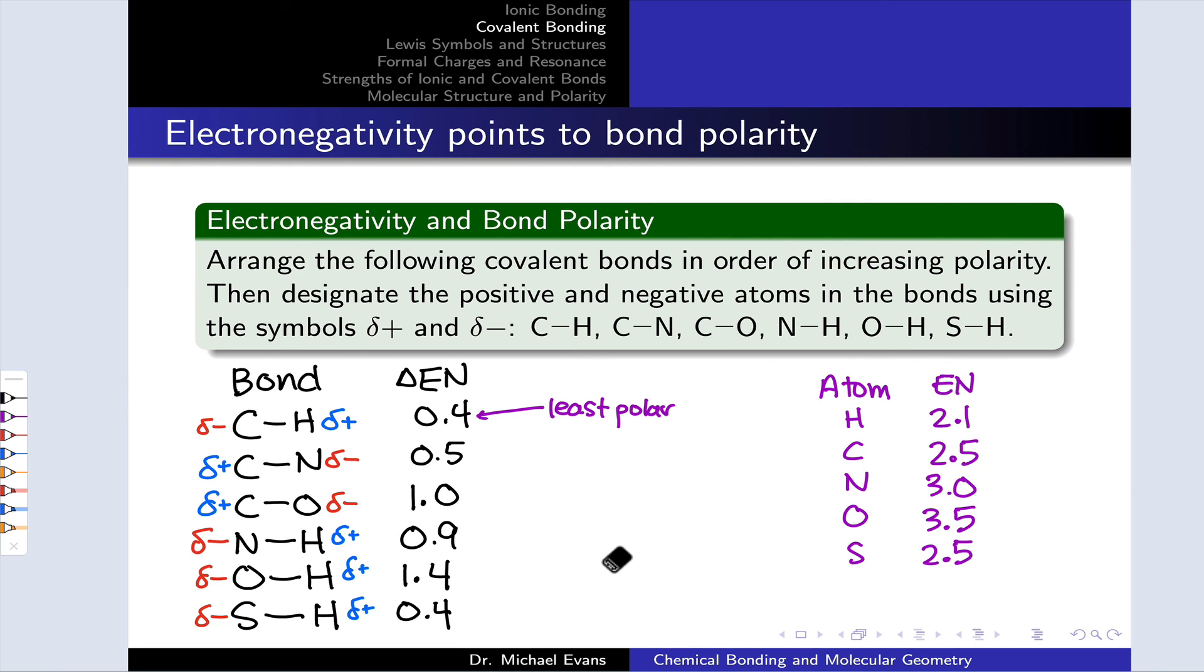So the least polar bond is the C-H bond, followed quickly by the S-H bond. The C-N bond comes next, followed by the N-H bond, followed by the C-O bond, and the most polar bond is the O-H bond. So the greatest electronegativity difference is associated with the most polar bond, and the least polar bond is associated with the smallest electronegativity difference.